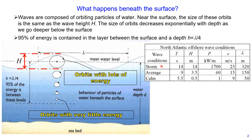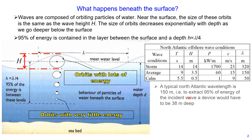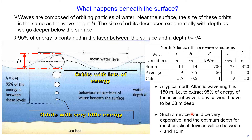For storm conditions, we have waves of around wave period 14 seconds, wave height 14 meters, and wavelength of 320 meters. Typical North Atlantic wavelength is 150 meters. To extract approximately 95% of energy of this incident wave, a design would need to be approximately 38 meters deep, which would be very expensive to build. The optimum depth for most practical devices is somewhere between 4 and 10 meters.